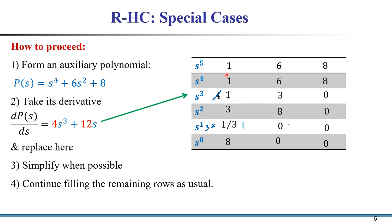In this complete first column, there is no sign change. No sign change means there is no zero of D(s) in the right half s-plane, meaning there is no pole in the right half s-plane. So the system is not unstable, but it is possible the system can be marginally stable, because D(s) has the factor s⁴ + 6s² + 8 — which caused the row of zeros.